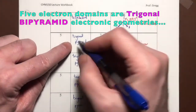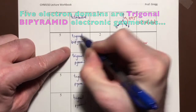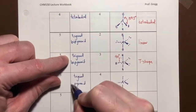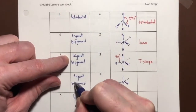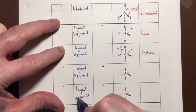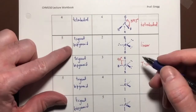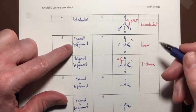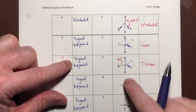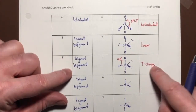I just noticed an error — these electronic geometries are trigonal bipyramids. So these are trigonal bipyramid electronic geometries, giving us linear and T-shaped molecular geometries.